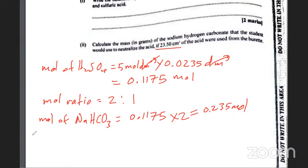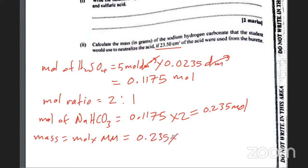Once you get the moles, calculate the mass: mass equals moles times molar mass. So 0.235 times 84 gives 19.74 grams. That is how you would get the mass.